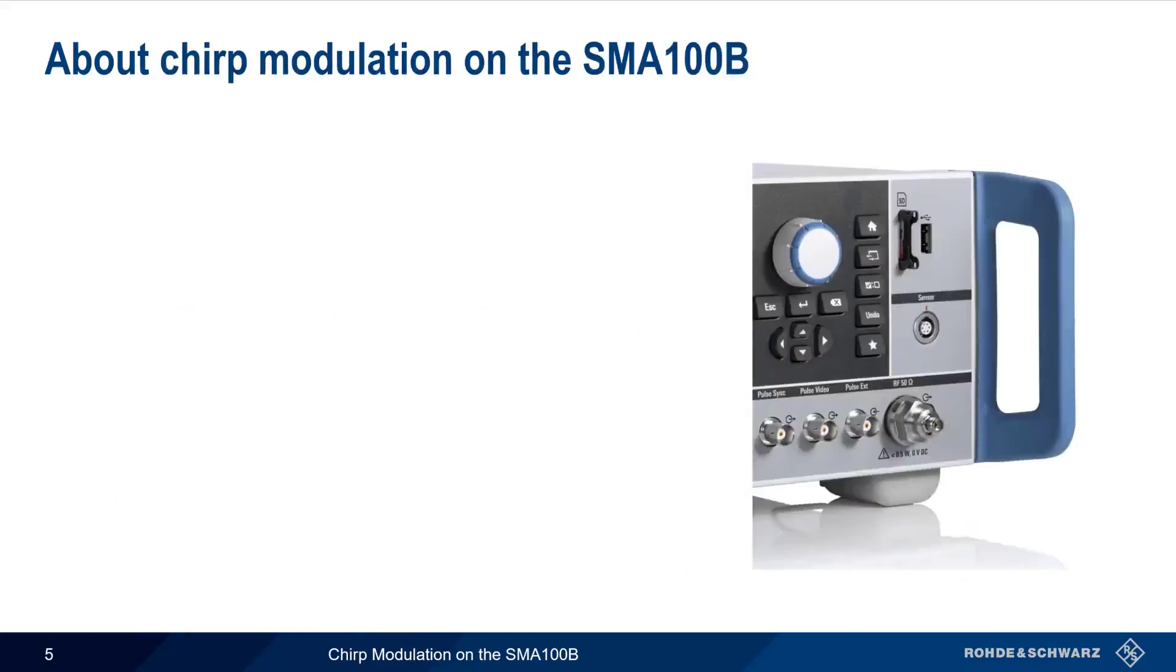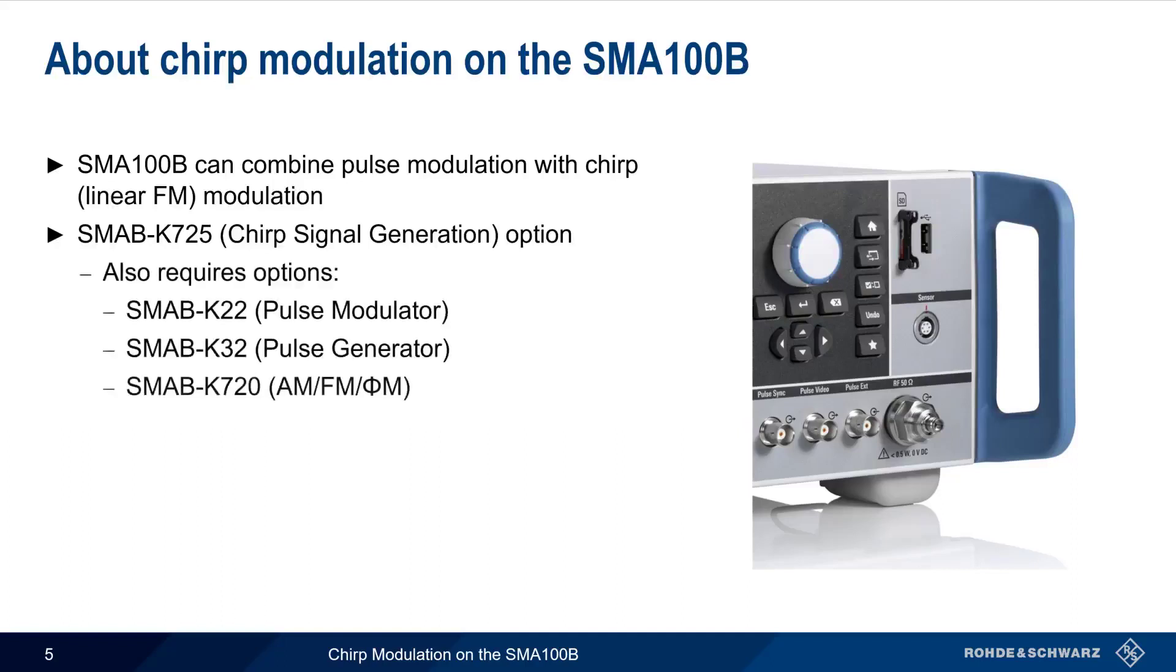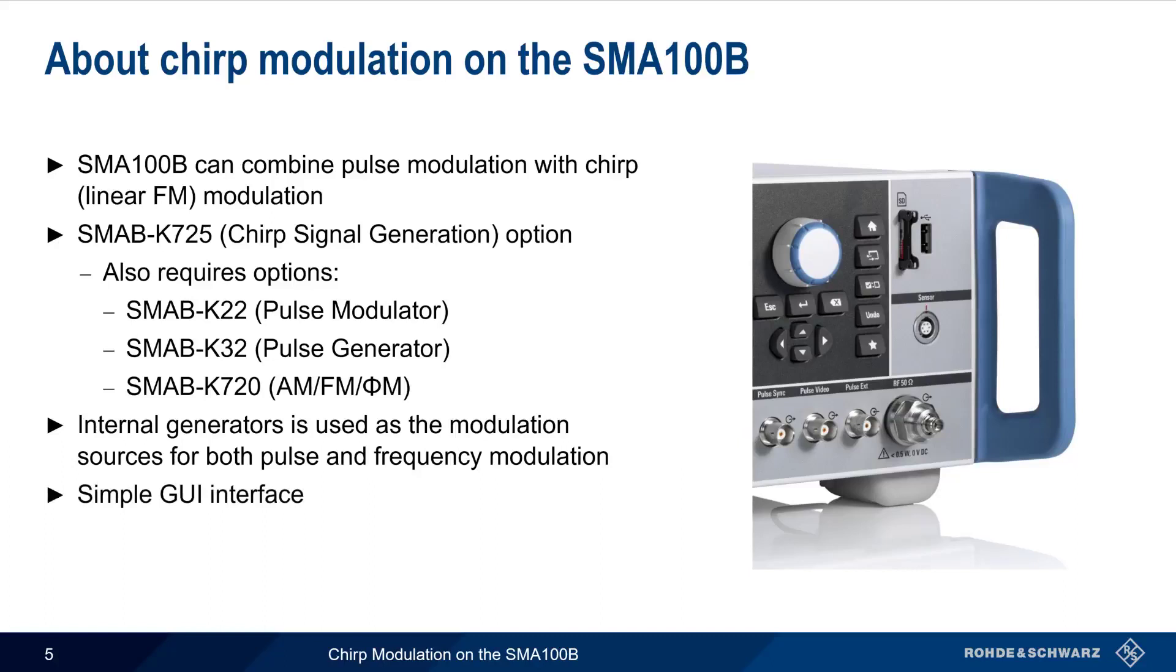The SMA-100B analog signal generator can combine pulse modulation with linear FM, or chirp modulation, to simulate this type of modulated radar pulse. Chirp signal generation is enabled by software option K725, and also requires options K22, K32, and K720. The SMA uses its own internal generators for creating both the pulse and frequency modulation, and in the remainder of this presentation, we will explain how to configure chirp modulation using the SMA's simple user interface.